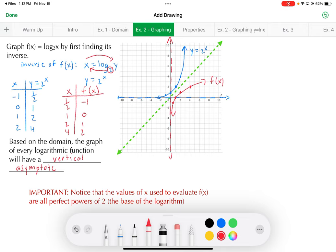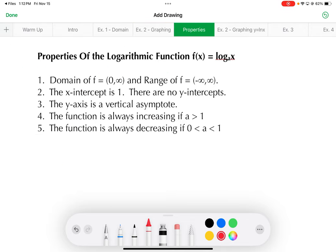All right, so based on that new function we just graphed in red there, we've got some properties that we want to draw your attention to. So, for any function f equals log base a of x, domain is 0 to infinity, range, all real numbers. x-intercept is 1, no y-intercepts. That's because there's the vertical asymptote at the y-axis, or x equals 0.